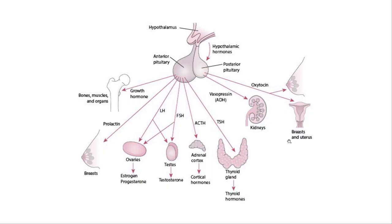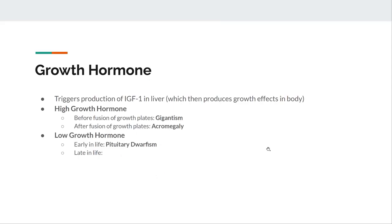The pituitary gland has an anterior and posterior portion. The anterior pituitary produces growth hormone, prolactin, LH, FSH, ACTH, and TSH. The posterior pituitary produces ADH and oxytocin. Growth hormone goes to the liver to stimulate IGF-1, which causes bodily growth. High levels before puberty cause gigantism as growth plates haven't fused; after fusion, acromegaly occurs with thick bones and facial dysmorphia. Low levels early in life cause pituitary dwarfism.